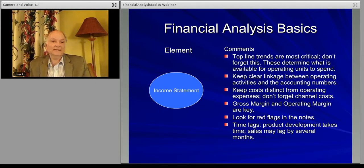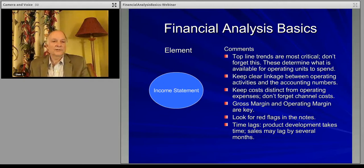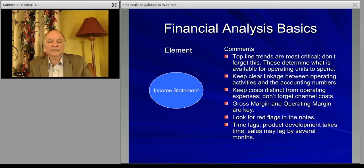You look for red flags in the notes when you go through the income statement. They might tell you things like, for example, there might be some one-off write-downs, or there might be some reversals in a reserve account which juice the earnings. For instance, you're reserving a lot for warranty, but you decide you've reserved too much, so you release that — that is actually an increase in earnings, but it's not real. It's coming from the accounting, so you watch for those things, which would be tagged in the notes.